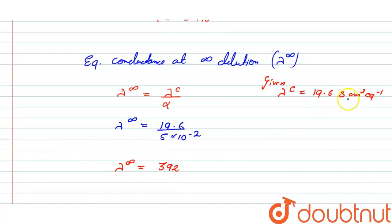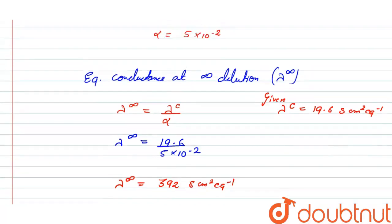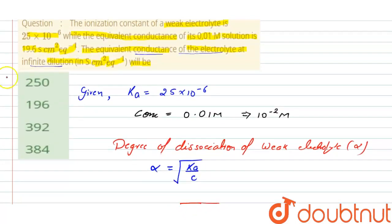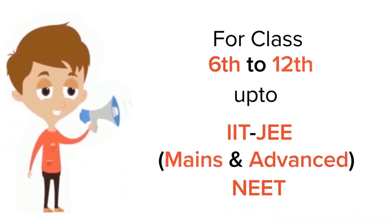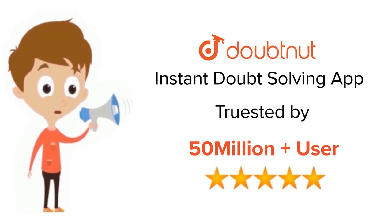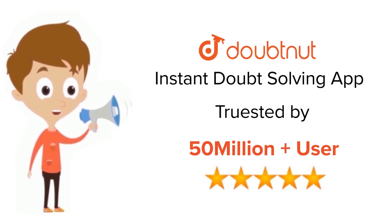So λ∞ = 392 S·cm²·eq⁻¹. Our correct option is option C, that is 392 S·cm²·eq⁻¹. Thank you. For class 6 to 12th, IIT-JEE and NEET level, trusted by more than 5 crore students — download Doubtnut today.